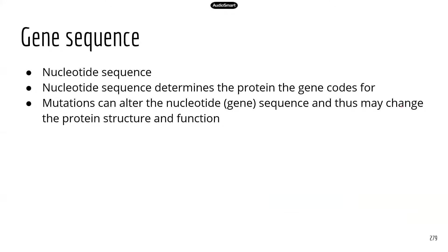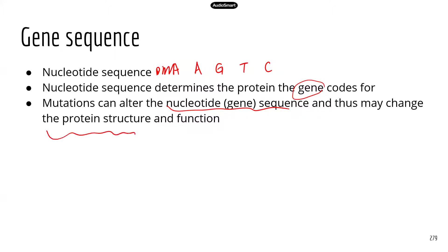Gene sequence is really a nucleotide sequence. Because the bases are different, DNA has four kinds of nucleotides: adenine, guanine, thymine, and cytosine. These different nucleotides can make various sequences, and the nucleotide sequence directs protein synthesis — it determines which protein the gene codes for. Mutations can change the nucleotide sequence, which can lead to changes in protein structure, and since structure determines function, the function of the protein could also be changed.